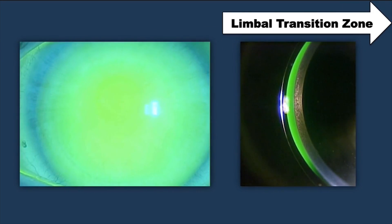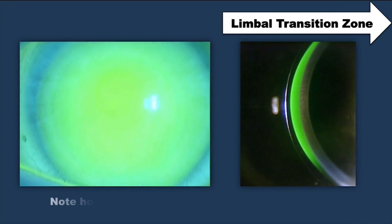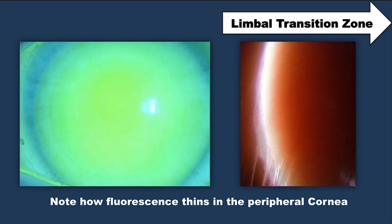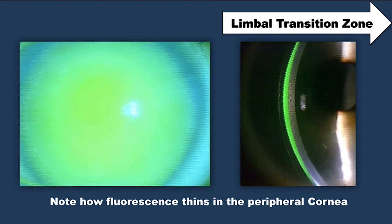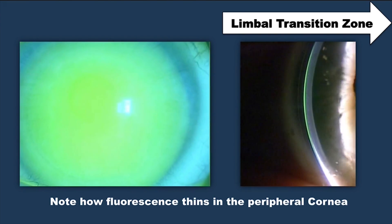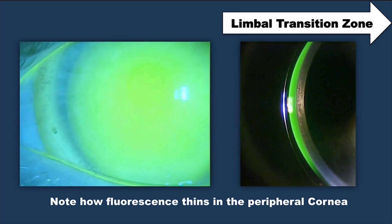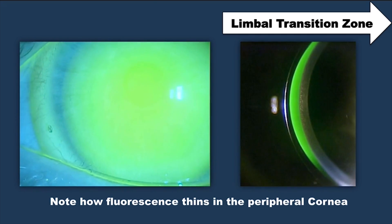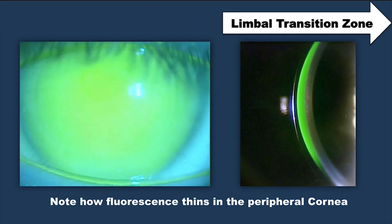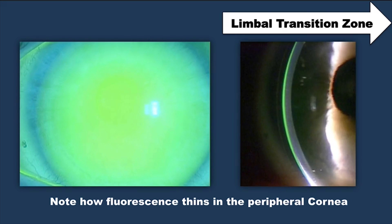In the limbal transition zone, touch can occur when the lens angles down too steeply and places pressure on the limbal portion of the cornea. We like to see clearance of the limbal area since this is where the corneal stem cells are generated. Limbal transition zone clearance is when the lens clears the corneal limbal area.